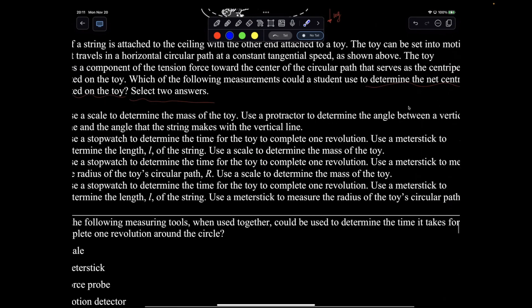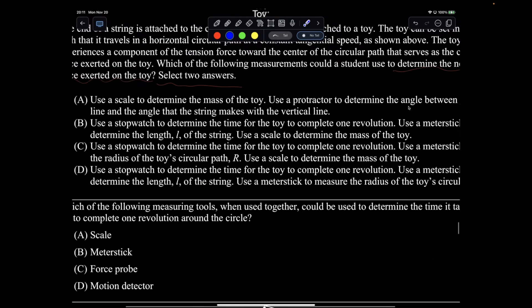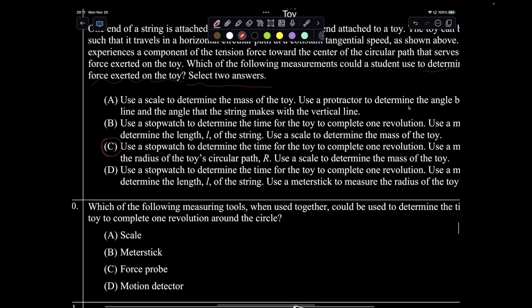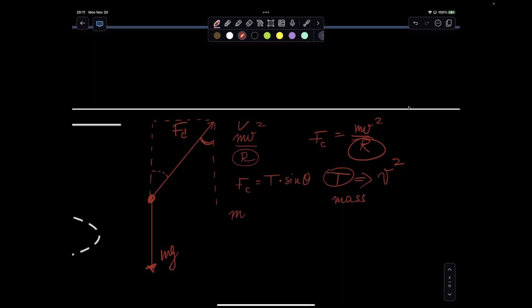Stopwatch to determine the time. Meter stick to measure the radius. And scale to... Yeah, I'm liking this. C is definitely something that I can do. So see how I get mass. If I measure period, then I can get v. And then if I have the meter stick, I can measure r. Boom.